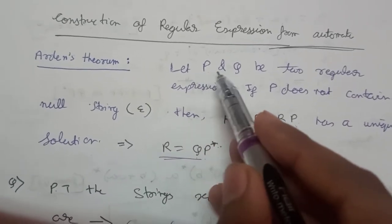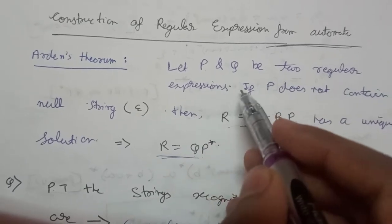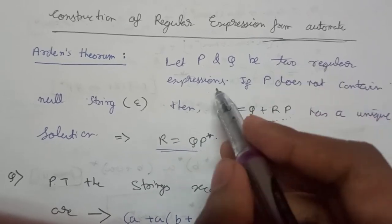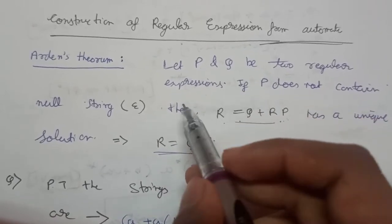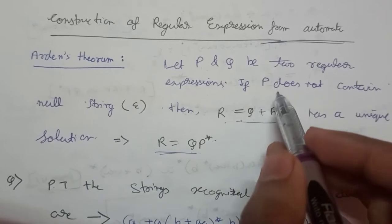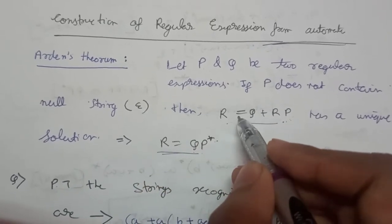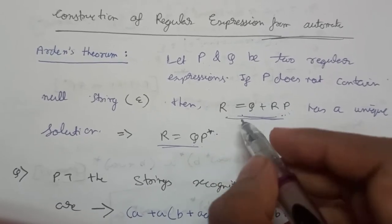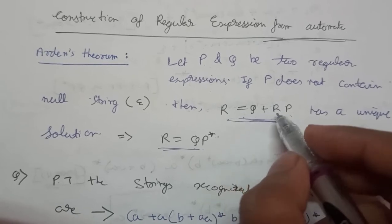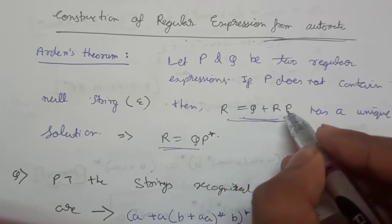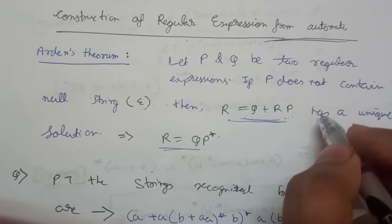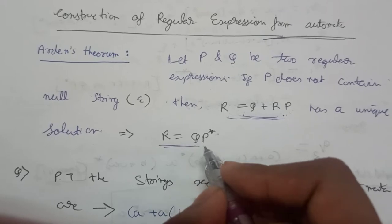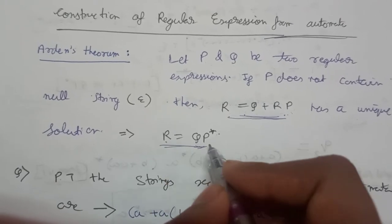The theorem states: let P and Q be two regular expressions. If P does not contain a null string, then R equals Q plus R P. This equation R = Q + RP will have a unique solution. The solution will be R = QP*.